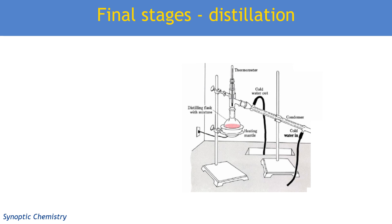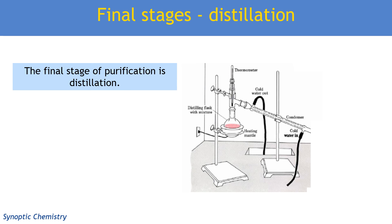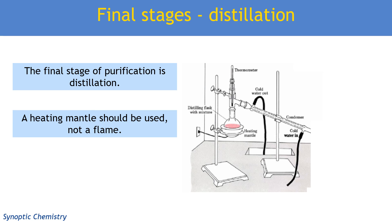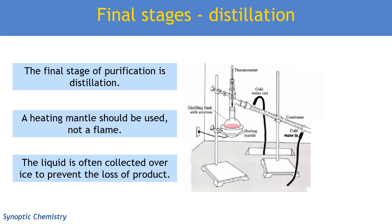Final stages: we've separated our organic liquid, neutralised the acid, washed it with distilled water, and dried it using a solid drying agent. To obtain an extra pure product, we would use distillation, since we're trying to get a liquid. Because we're distilling an organic liquid, it's much safer to use an electric heating mantle rather than a flame to heat the flask. If the liquid is particularly volatile, we might also put ice around the collection vessel at the end of the condenser to prevent any extra loss of product through evaporation.